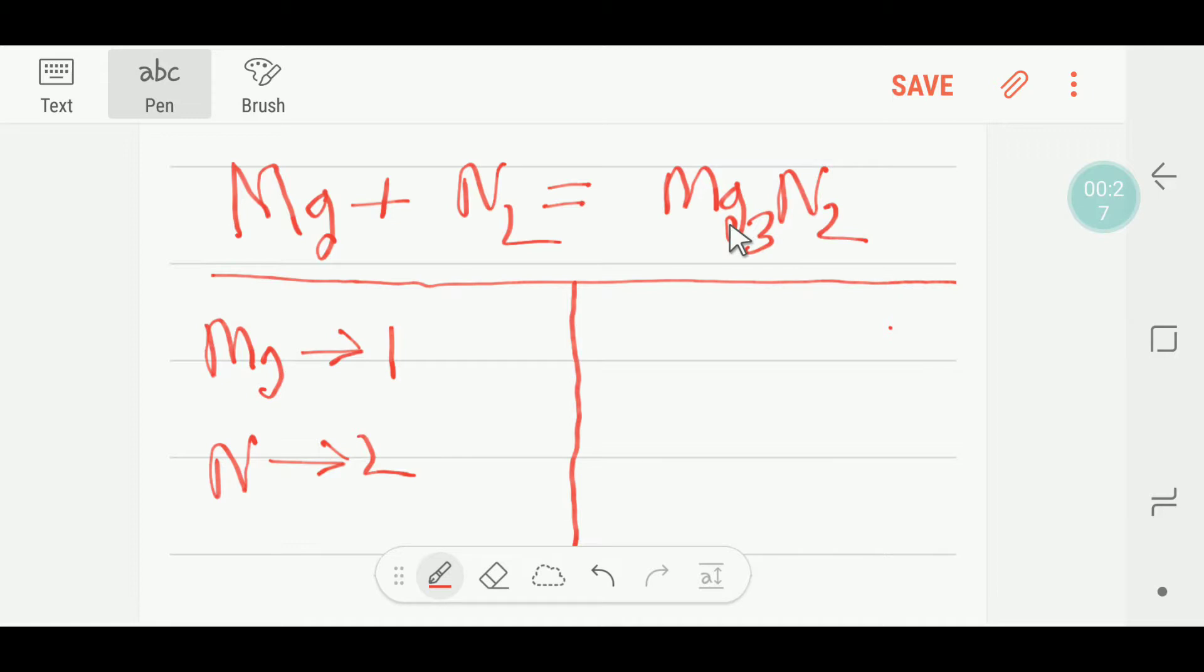On the right hand side we have three magnesium and we have two nitrogen. Okay, so to balance the magnesium...